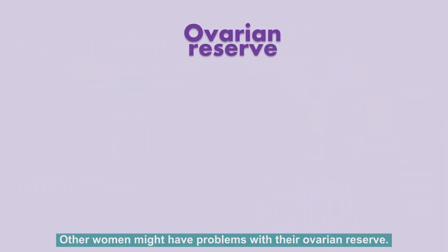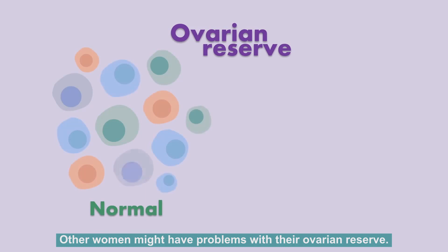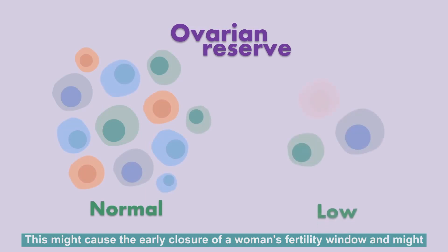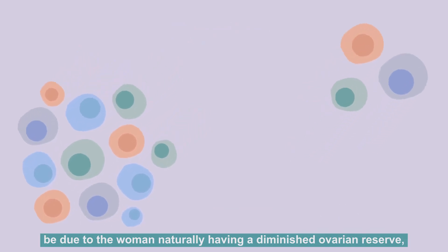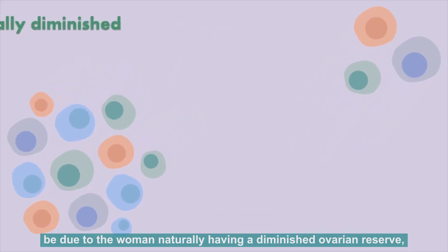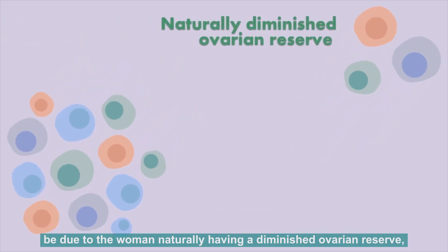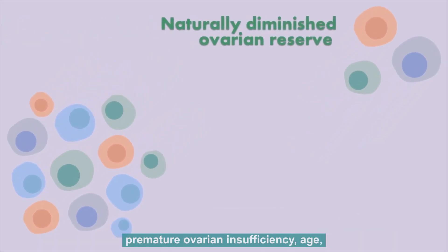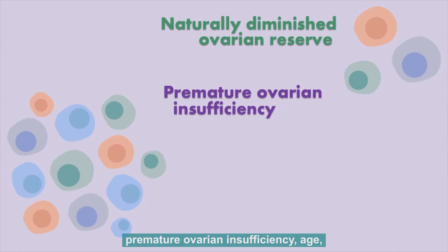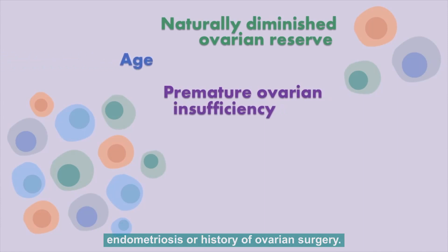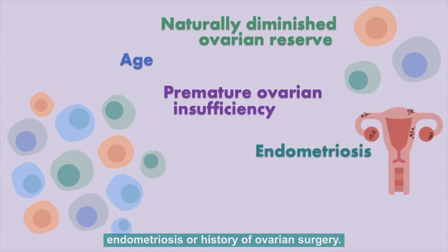Other women might have problems with their ovarian reserve. This might cause the early closure of a woman's fertility window and might be due to the woman naturally having a diminished ovarian reserve, premature ovarian insufficiency, age, endometriosis, or a history of ovarian surgery.